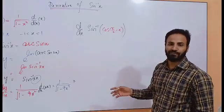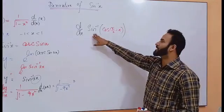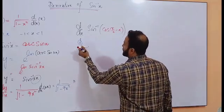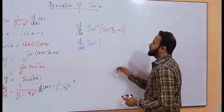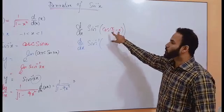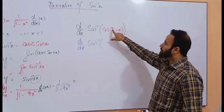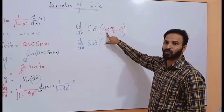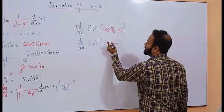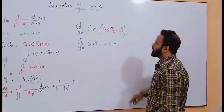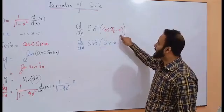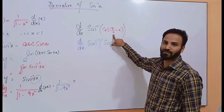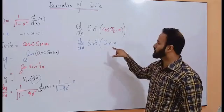An important question which has appeared in different entrance exams: what is the derivative of sine inverse of cosine of (π/2 minus x)? Now I am going to solve this. I will simplify this expression using the allied angle formula. You can see that π/2 is an odd multiple, so cosine will be changed using the co-ratio method into sine. The angle will be x, and sine will be positive because this angle is lying in the first quadrant where all trigonometric ratios are always positive. So cos(π/2 minus x) is equal to sine x.